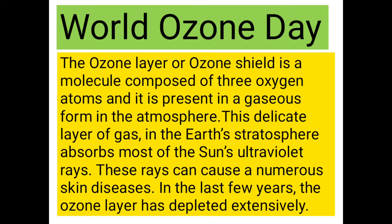The ozone layer or ozone shield is a molecule composed of three oxygen atoms and it is present in a gaseous form in the atmosphere. This delicate layer of gas in the earth's stratosphere absorbs most of the sun's ultraviolet rays.